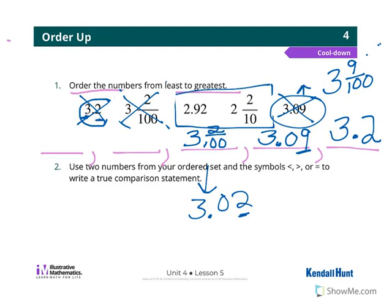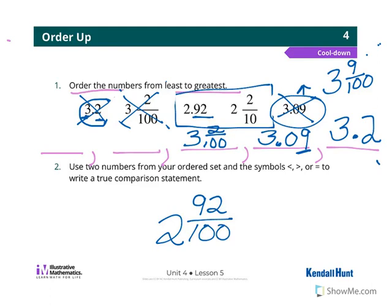Okay, so 3 and 2 hundredths, remember it's the same as 3.02—so 2 is less than 9. Okay, so now my next smallest, well now I've got to look at these two: 2 and 92 hundredths or 2 and 2 tenths. I'm going to use this space down below so I can rewrite them and we can really look at them. So I'm going to write them both as a fraction: 2 and 92 hundredths, 2 and 2 tenths. Well I can't compare tenths to hundredths.